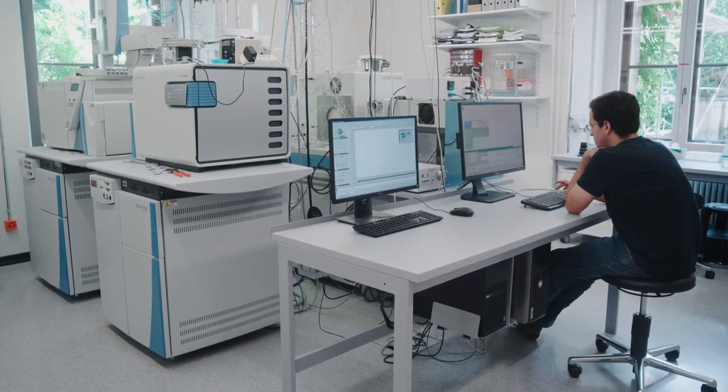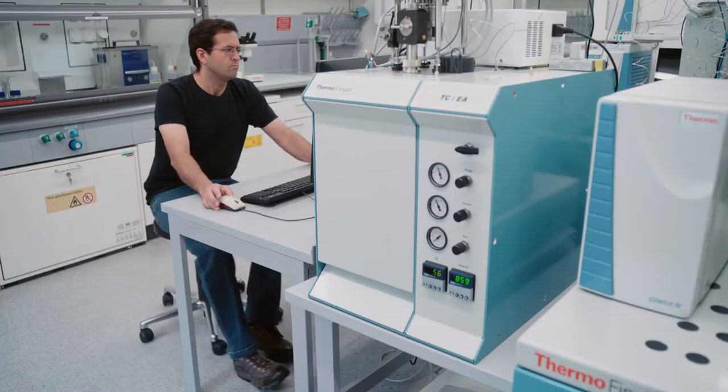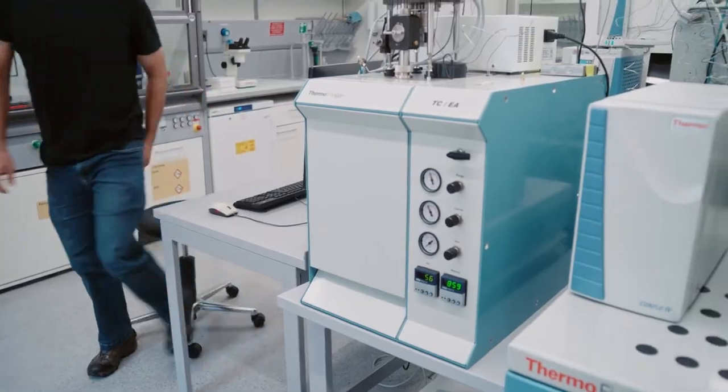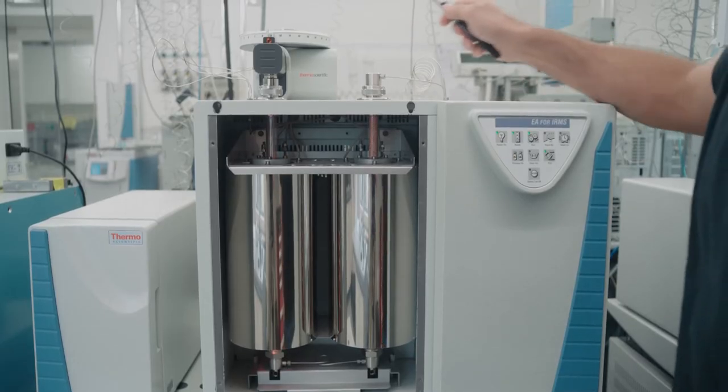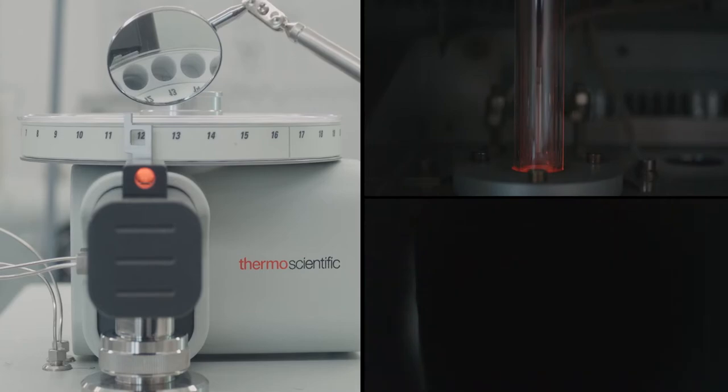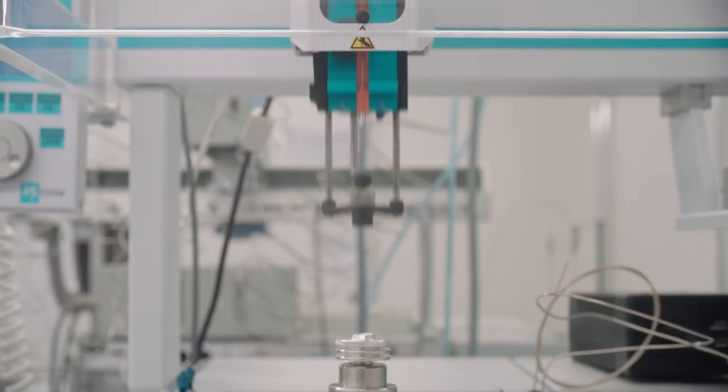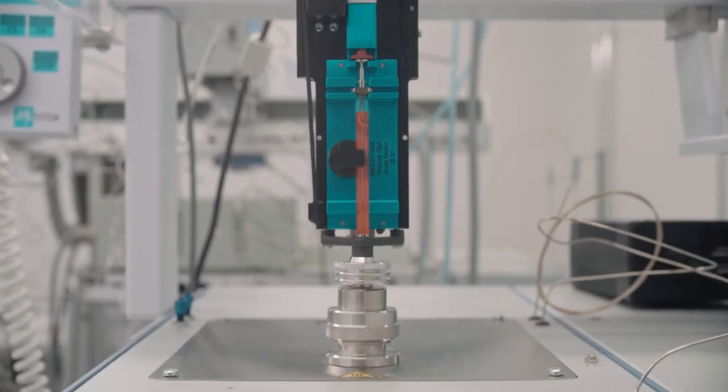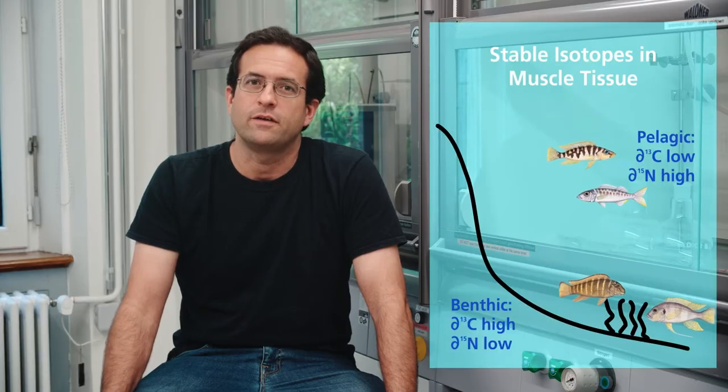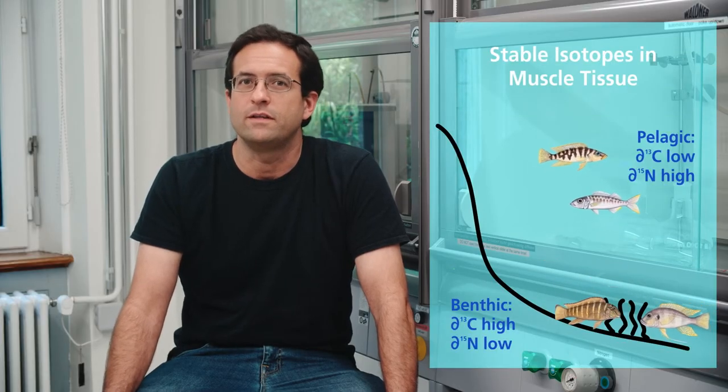We're in the Stable Isotope Lab in the Physiological Plant Ecology Group. For the Salzburger Group, we analyzed dried material from fish from Lake Tanganyika. They used this information to look at the carbon and nitrogen isotope values of those materials to understand what types of food sources different fish were consuming at different levels in the food web in the lake ecosystem.